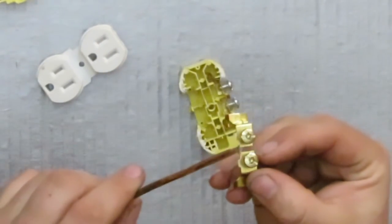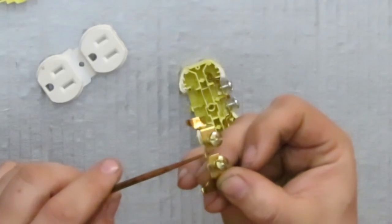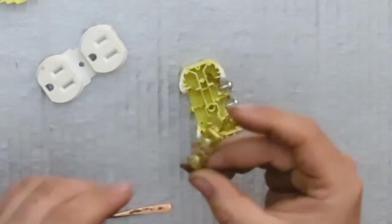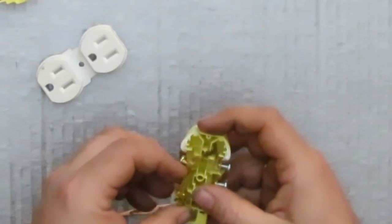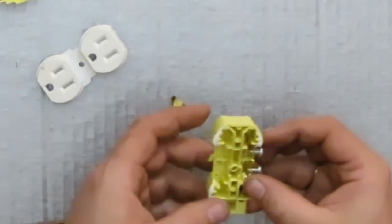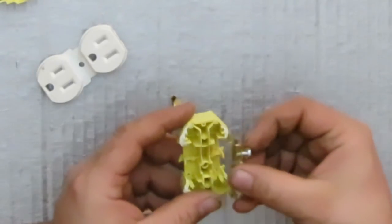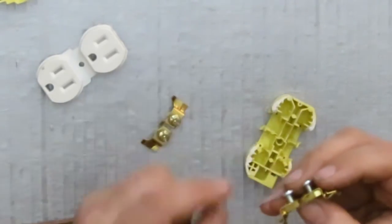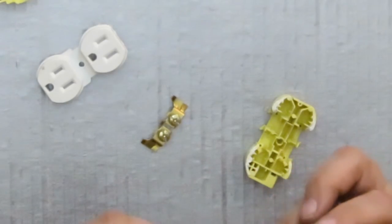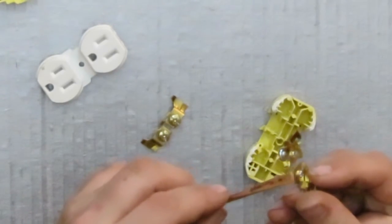And then you have a little tab that can be broken out in order to separate the top and bottom. And the same thing is going on on the neutral side. You have your spots for your stab ins, you have your screws, you have your tab.